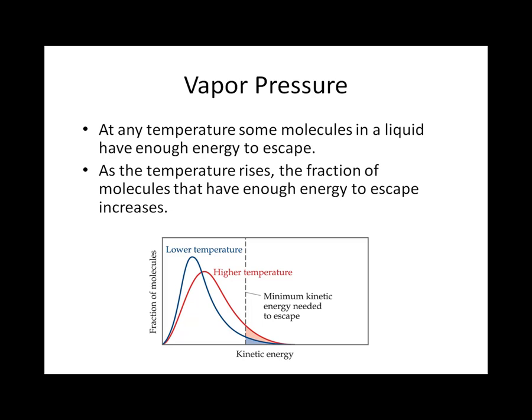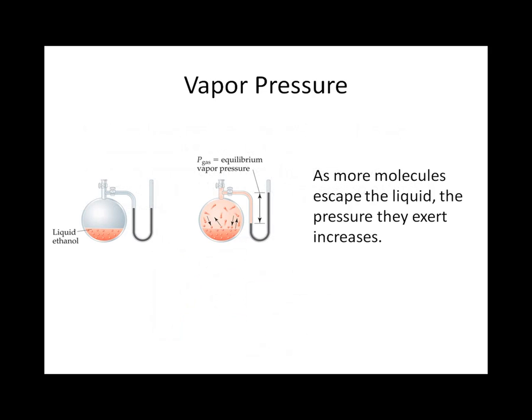As the temperature is increased, more of the molecules end up on the right side of the line. These escaped molecules exert pressure on their surroundings like any other gas. This pressure is called vapor pressure, and as the temperature of the liquid increases, so does the vapor pressure — until the liquid reaches the boiling point, at which time the vapor pressure of the liquid is equal to atmospheric pressure, or 760 torr.